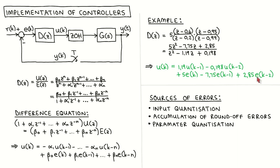The difference equation realization is only one of several possible controller realizations. Although they are all mathematically equivalent, a certain realization might be more or less sensitive to calculation errors. One source of calculation errors is the quantization of the sampled output signal, which could be significant if a low resolution analog to digital converter is used or the analog output signal is badly scaled compared to the range of the analog to digital converter. Another possible source of errors is the accumulation of round-off errors in the controller calculations, especially if it is a complex controller where the calculation depends on long sequences of calculations.